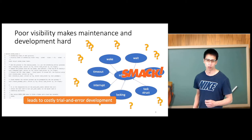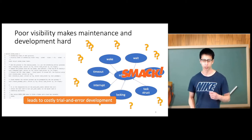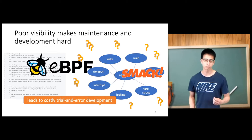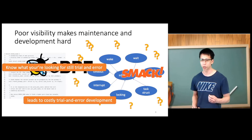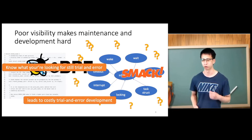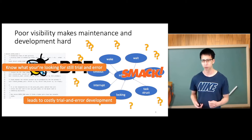So developers usually use trial-and-error development. But can we do better? Like eBPF? Well, the problem with eBPF is that you have to know what you are looking for, and it is still a trial-and-error approach. So can we do a single-shot query and get all the answers we want?